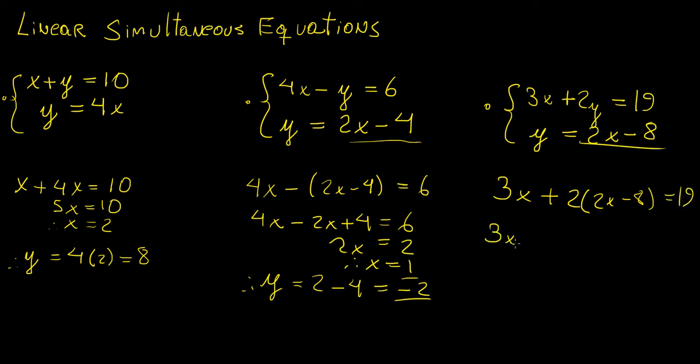Now we're going to have 3x. Expand this side. That's 2 times 2. That's 4. So that's 4x. Plus 2 minus 8. Sorry, 2 times minus 8. That's minus 16. Equals to 19. Now these two become 7x.